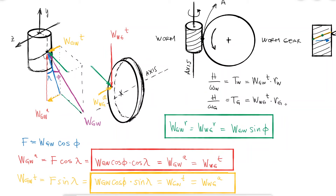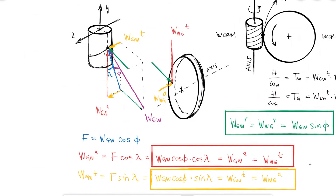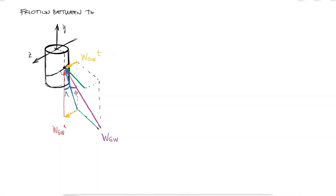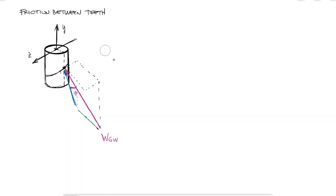As opposed to the losses in power found in helical, bevel, or spur gears due to bending and other reasons, a big component of the power loss in worm gears is the fact that the teeth are sliding on each other, which means there's friction. Even though everything we've derived so far is still true, if the friction coefficient between the teeth causes forces that are not negligible, we'd have to take into account the friction forces.